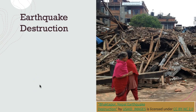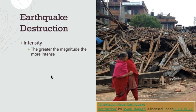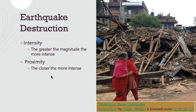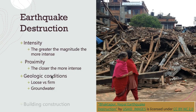Earthquake destruction: the amount of damage caused by an earthquake at a particular location depends on several factors. First, the intensity of the shaking — the greater the magnitude of the seismic waves, the more intense the shaking will be. Second, the proximity of the location relative to the focus and epicenter, since seismic waves weaken with distance. Third, the geologic conditions at the location — loose sediment will experience more intense shaking than solid bedrock, and shallow groundwater can lead to liquefaction. And fourth, the material and design of buildings and other structures. In Haiti, for example, poorly constructed buildings caused the deaths of tens of thousands of people when they collapsed.